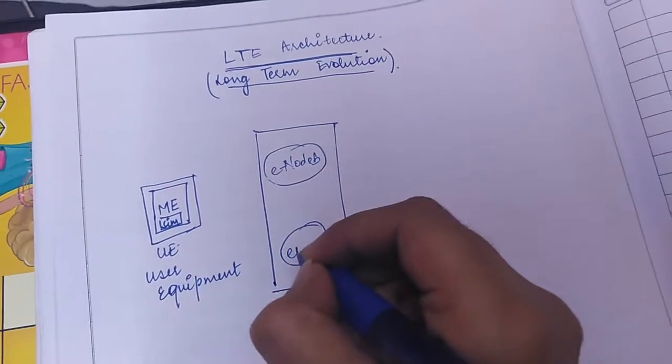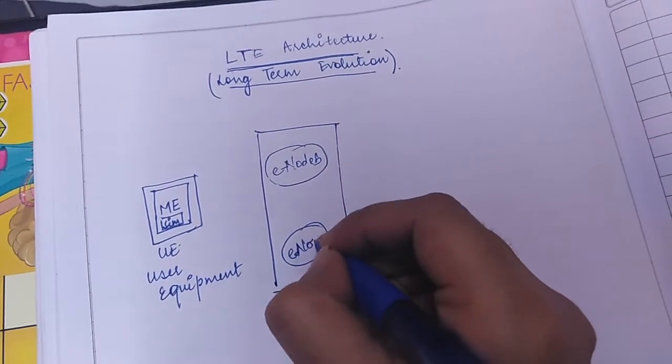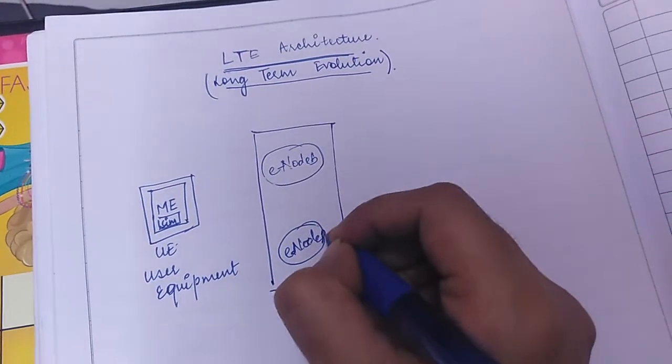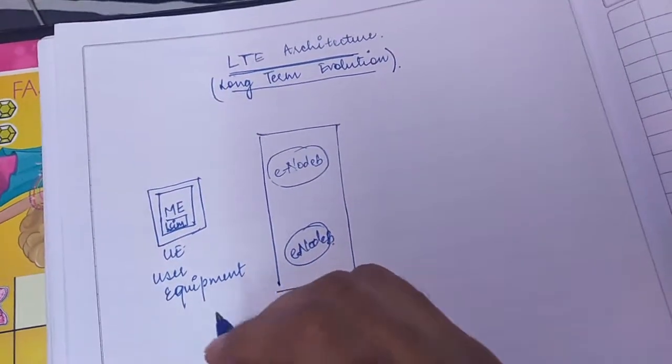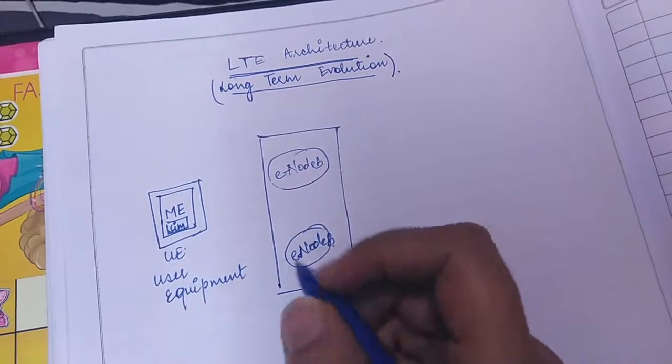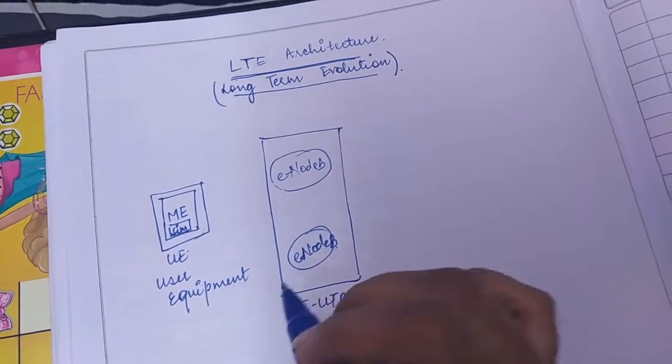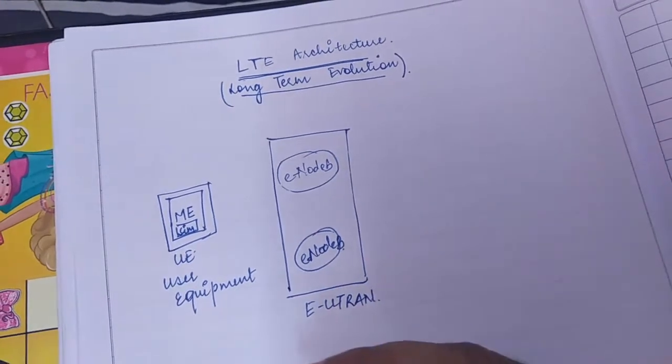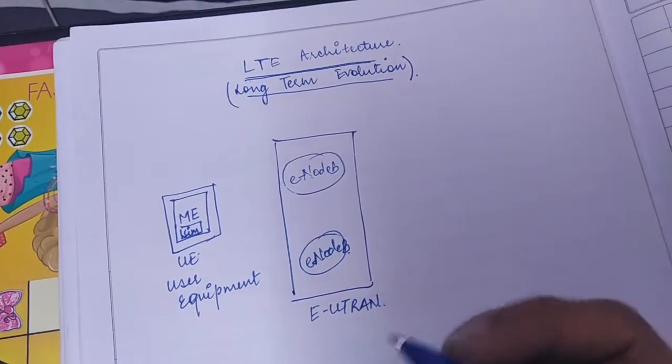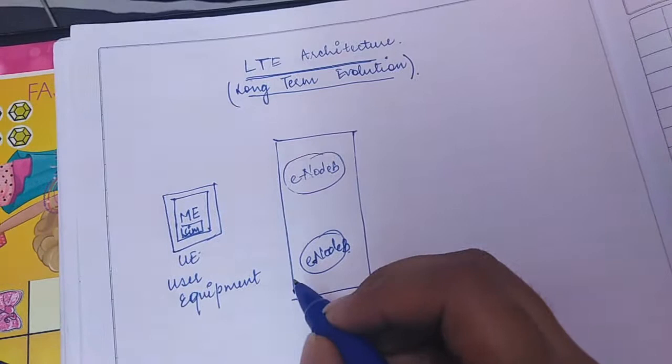That is evolved node B. In 3G architectures we have node B, so when modifications have been done onto node B in order to upgrade it from 3G to 4G, hence the name is e node B.